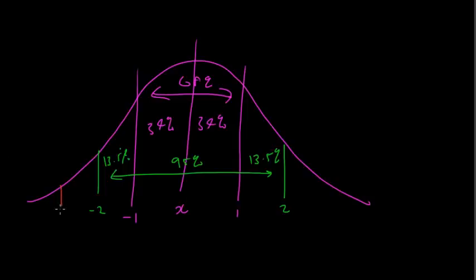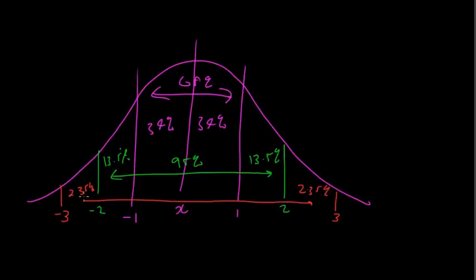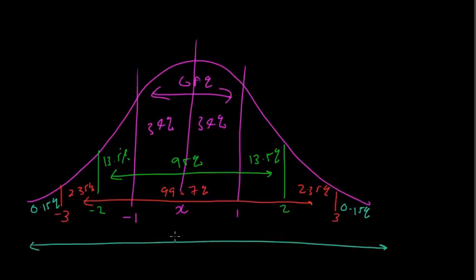We then go to three standard deviations either side, or Z scores of negative 3 and positive 3, which gives a further 2.35%, giving a total of 99.7%. And then last of all, you have 0.15% either side, which — add it all up together — gives you 100%.